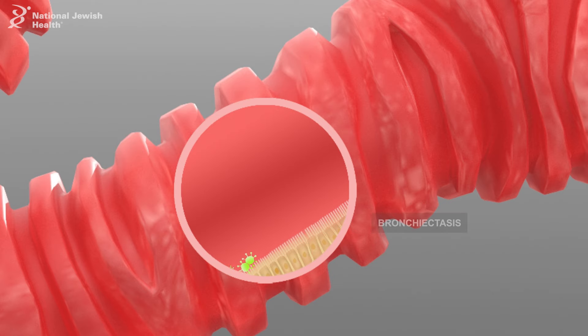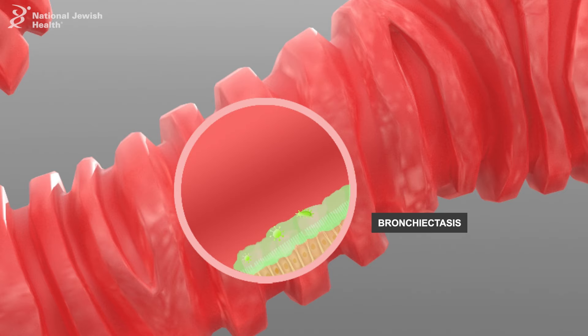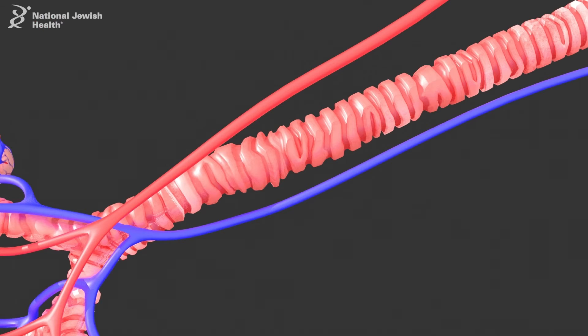In bronchiectasis, the normal propulsion of the cilia is lost, and secretions pool in the dilated airways. As a result of chronic inflammation,